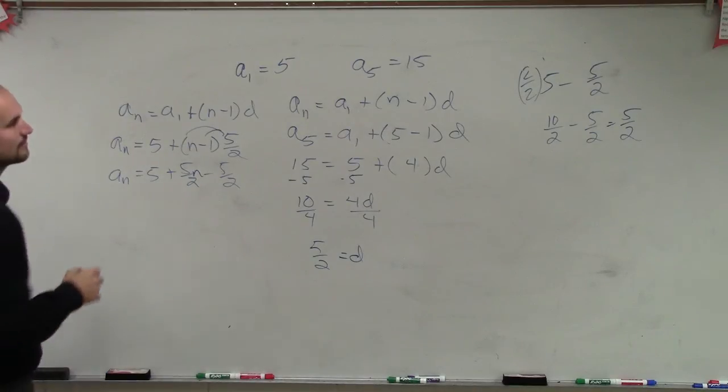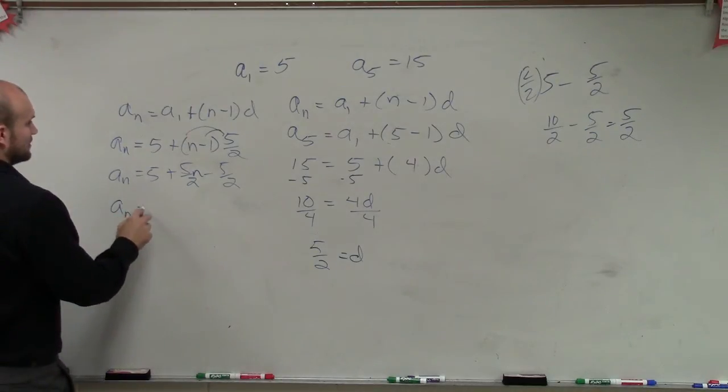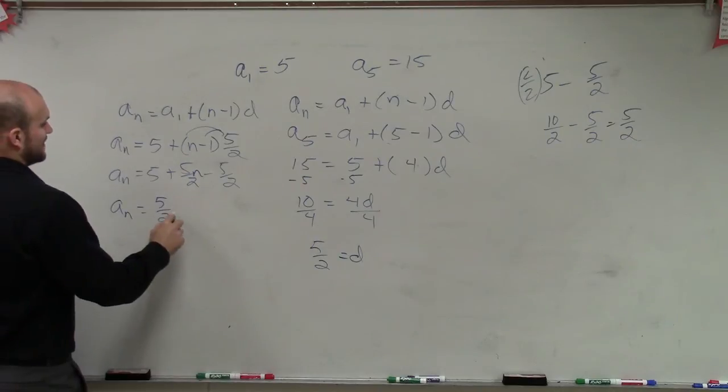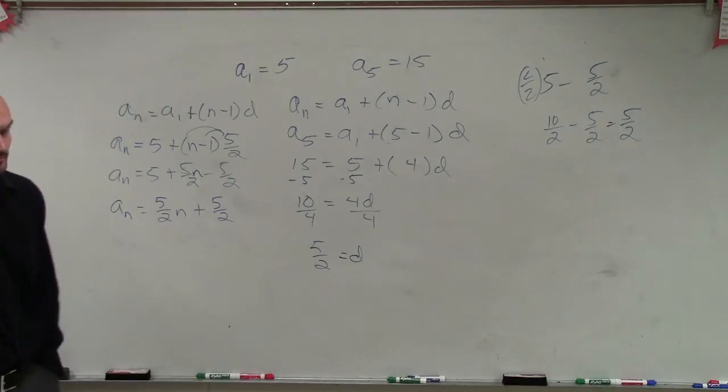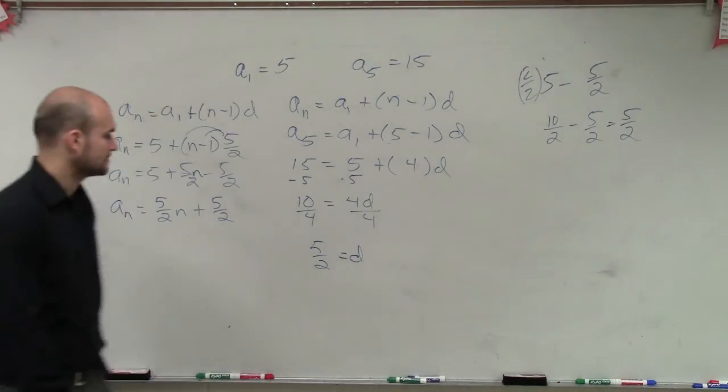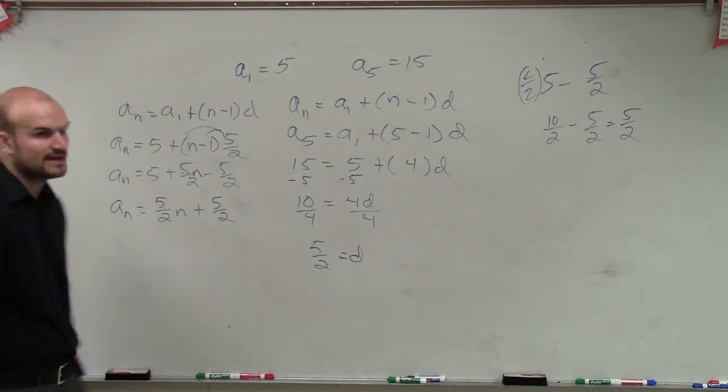So therefore, a sub n equals 5 halves n plus 5 halves. And that's going to be your rule.